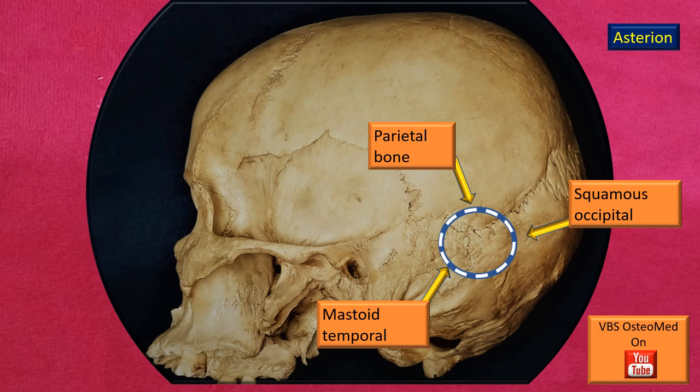The arrows indicate three important bones: the parietal bone at its posterior inferior angle, the squamous part of the occipital bone at its lateral angle, and the mastoid part of the temporal bone. These three are the key bones that cover this area.